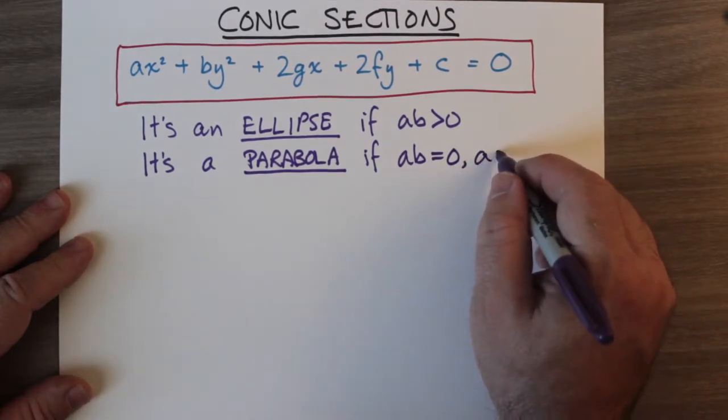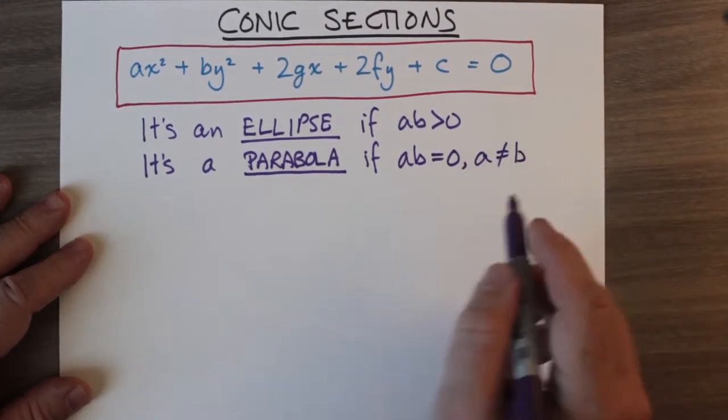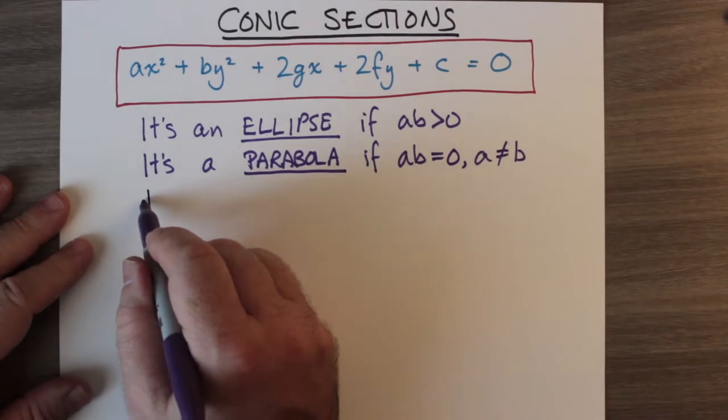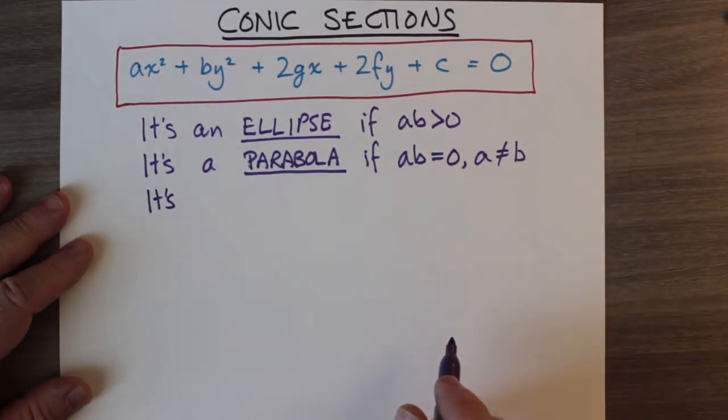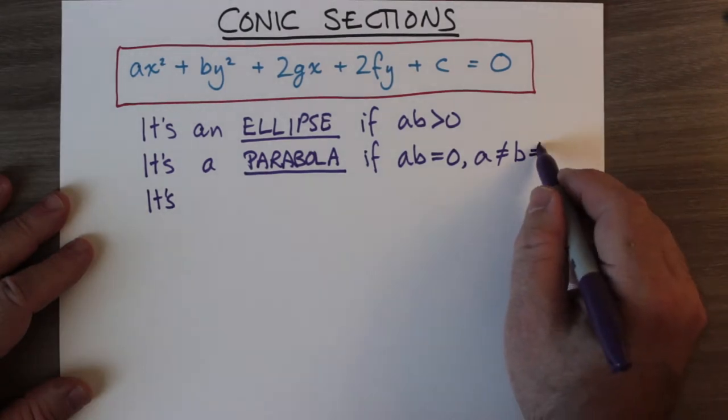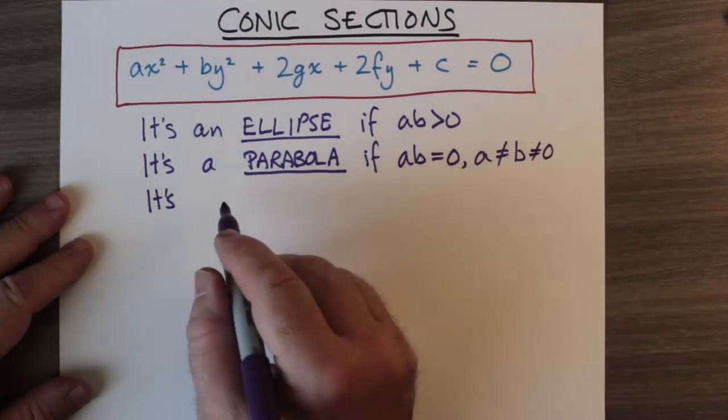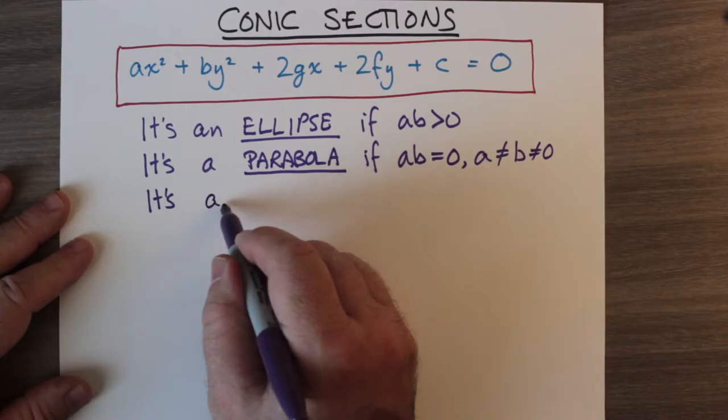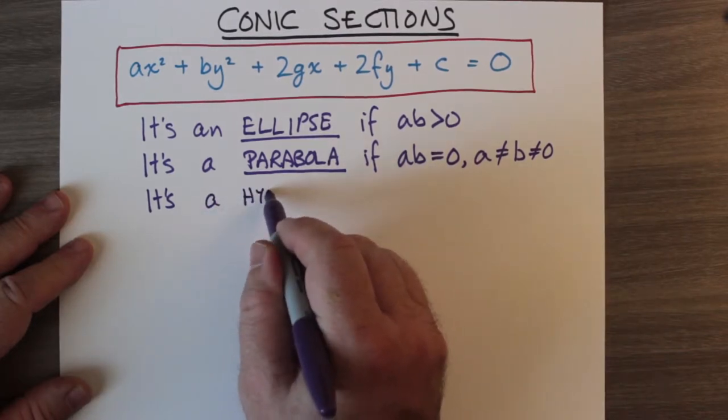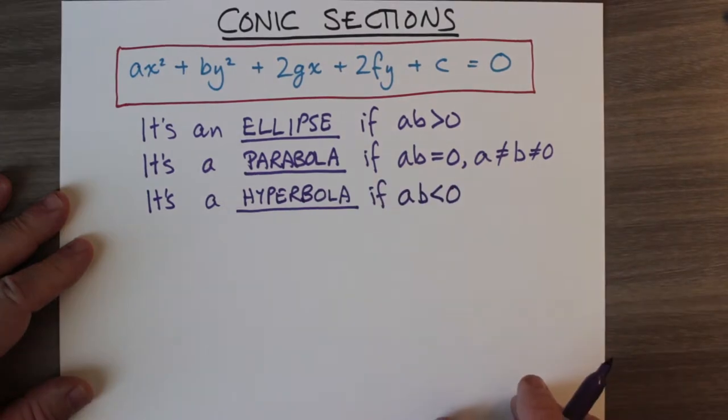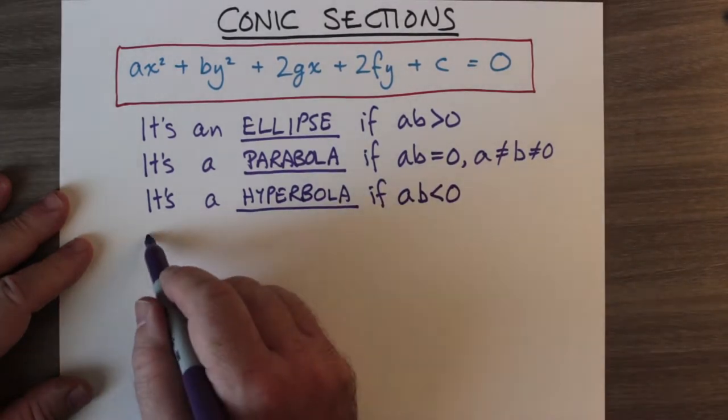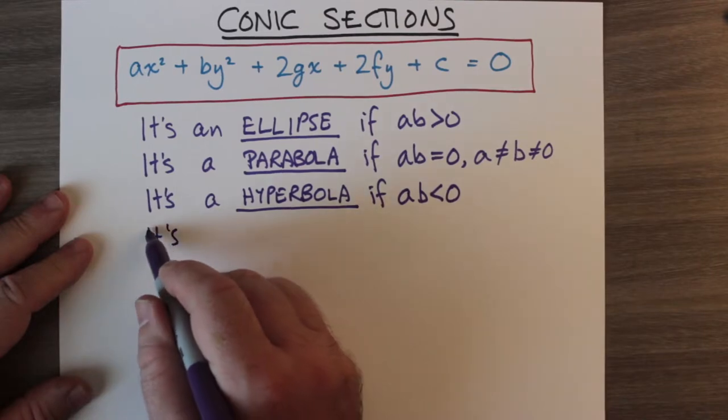We don't want a and b to both be zero, but one of them has to be zero. Now if ab < 0, in other words if either a or b happen to be negative, then we have a hyperbola. If a = b, if a and b are equal to each other, then we have a circle of a certain radius.